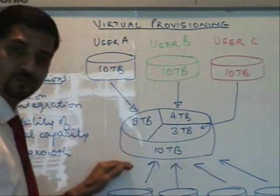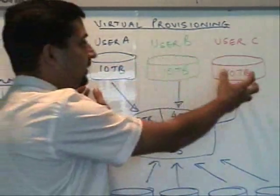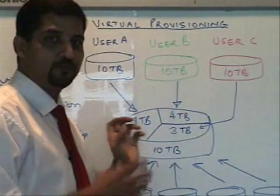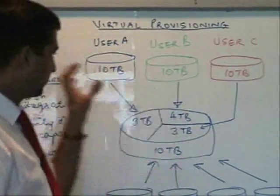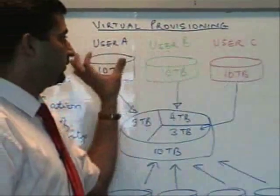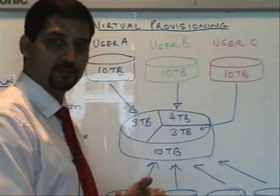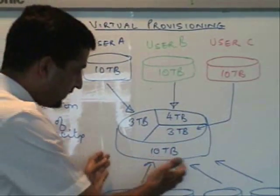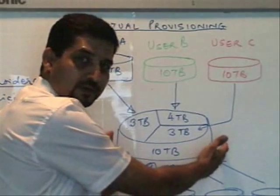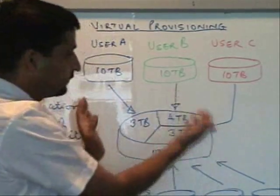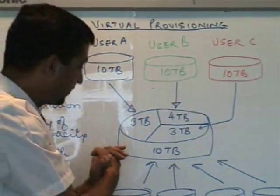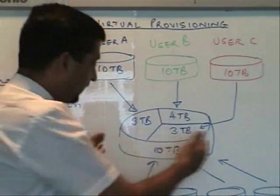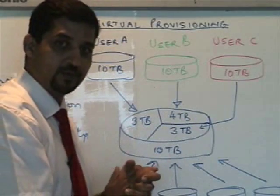Let's look at a situation where logically it is being presented to all three of them as a 10 terabyte capacity — we call this virtual allocation. All the users feel that they've got 10 terabytes. At the back end, the physical allocation is different. What the administrator has done is taken a total of 10 terabytes, knowing that each of them is using only a couple of terabytes at the moment, and given them some capacity — for example, 3, 3, and 4, making up a total of 10 terabytes for the physical allocation.